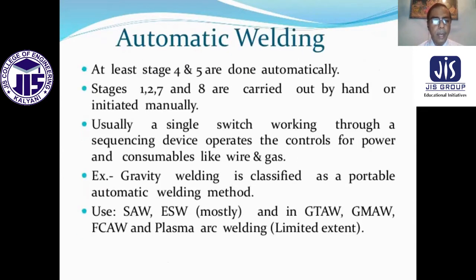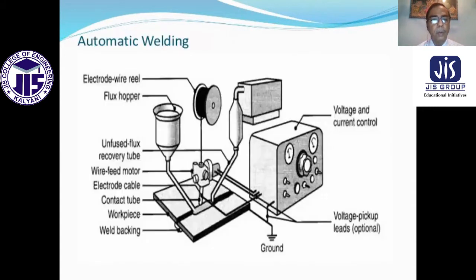Automatic welding: at least stages four and five are done automatically. Stages one, two, seven, and eight are carried out by hand, and initiation is done manually. Usually a single switch working through a sequence device operates the control for power and consumables like wire and gas. For example, gravity welding is classified as a portable automatic welding method. Used mostly in SAW and EHW, and to a limited extent in gas tungsten arc welding, gas metal arc welding, flux core arc welding, and plasma arc welding.